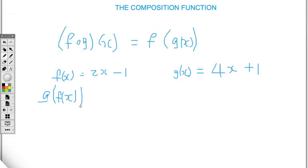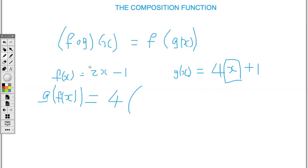We could also ask for g(f(x)). What this means is that we're going to substitute the function f into g. Identify where is my variable — I will be replacing that variable with 2x minus 1. So we'll have 4, open bracket, replacing the variable x with 2x minus 1.